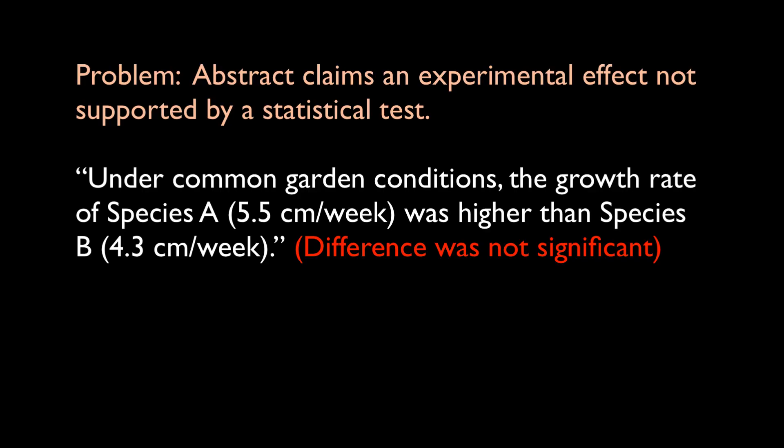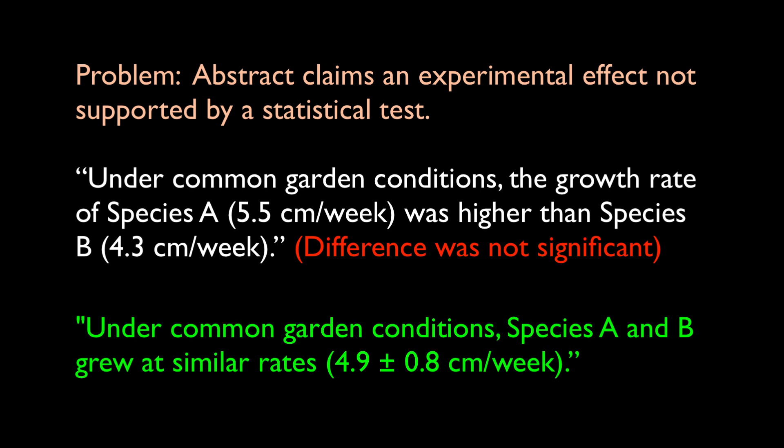In this first example, the abstract says that the study showed a difference between two plant species. However, the statistical test reported in the results section indicated that there was no significant difference between species A and B. The growth rate of species A at 5.5 centimeters per week was arithmetically greater than that of species B at 4.3 centimeters per week, so the statement is true in that narrow sense. But a non-significant statistical test means that the abstract gives a false impression of the outcome of the study. Obviously, the authors need to report their findings accurately or re-run the experiment.